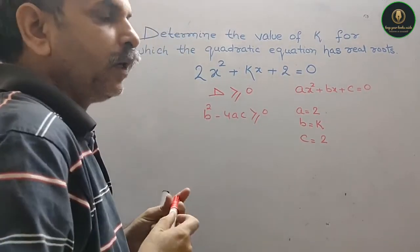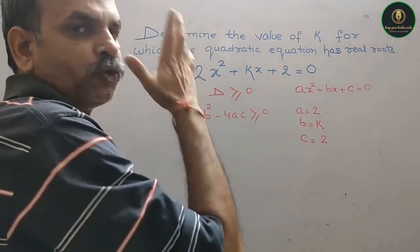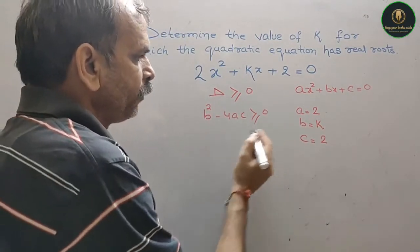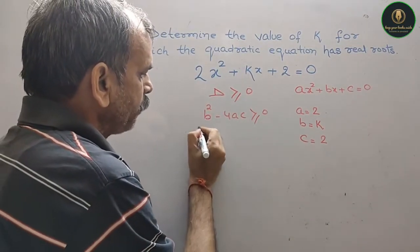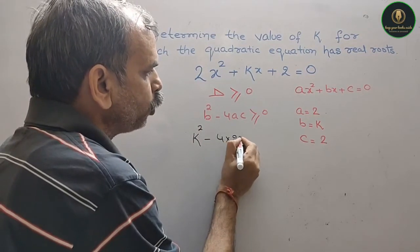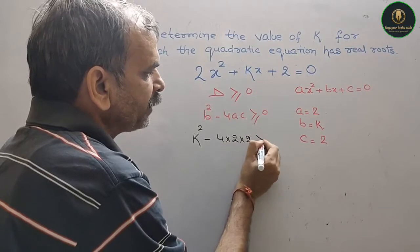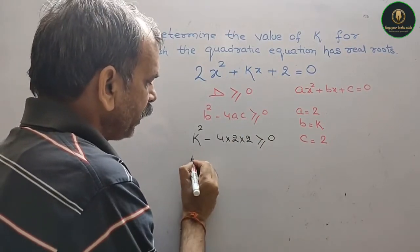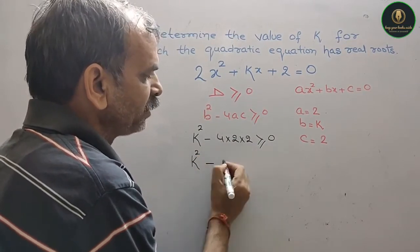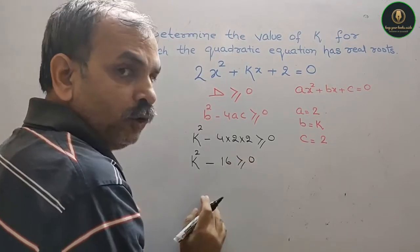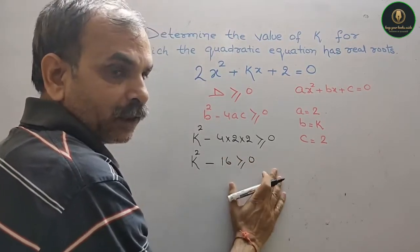Now we will substitute this into the discriminant formula. So we have k² minus 4 into 2 into 2, which is greater than equal to 0. And now k² minus 16 is greater than equal to 0. Taking minus 16 to the other side, k² is greater than equal to 16.